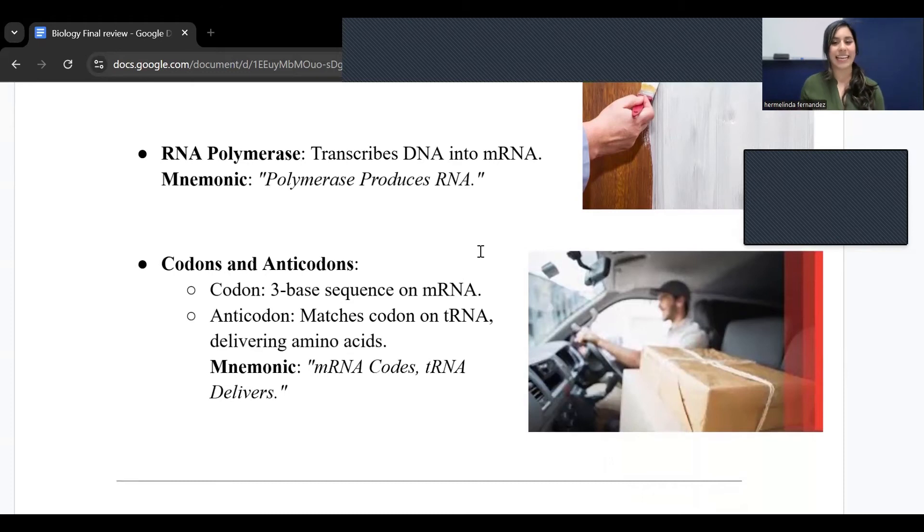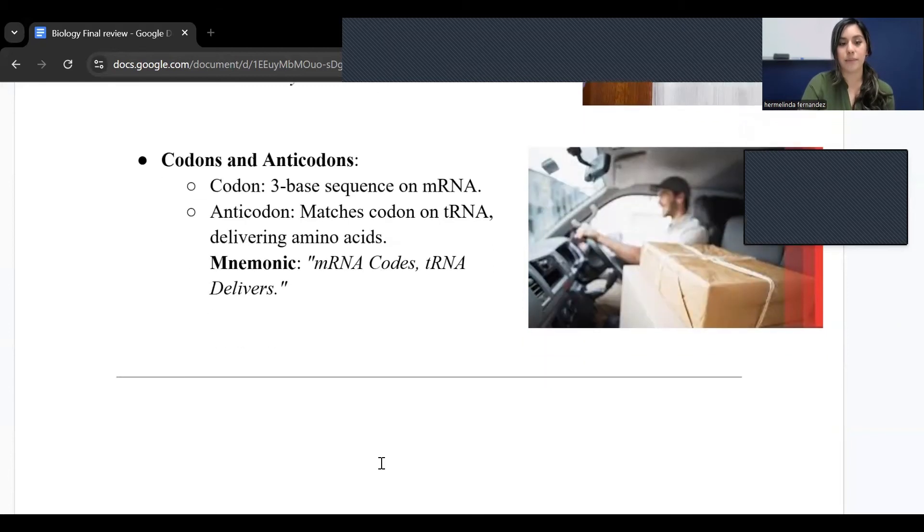Now we have codons and anticodons. A codon is a three-base sequence on mRNA. An anticodon matches that codon on tRNA delivering that amino acid. Think of mRNA codes that message - our mRNA is our messenger. tRNA is our traveler - they travel to deliver that package or whatever you need. So mRNA is our messenger and tRNA is our traveler or our person that transcribes that message.